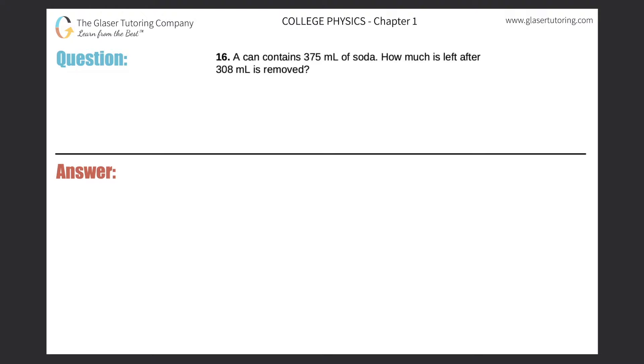Number 16: A can contains 375 milliliters of soda. How much is left after 308 milliliters is removed? All right, so this question is fairly straightforward. Let's come up with a very simple formula.